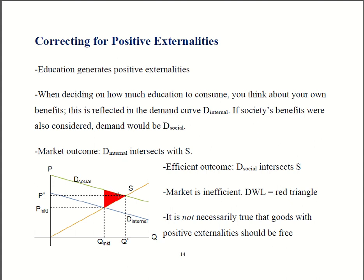So if society values education at, say, $15,000 up here, and it costs society $13,000 to provide the education, then it would be a good thing if the education were to happen — the benefits of $15,000 exceed the costs. However, because you're focused on your own benefits and not society's benefits, from your standpoint the costs look too high, so you don't do it. That's how the market would be inefficient if there weren't some kind of policy to fix things.